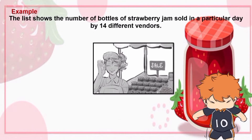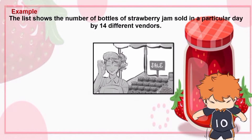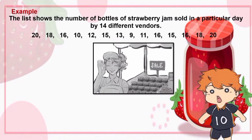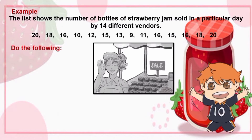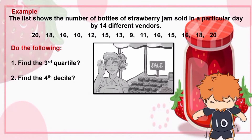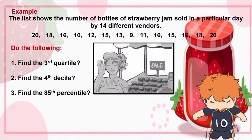The list shows the number of bottles of strawberry jam sold in a particular day by 14 different vendors. Here is the list of bottles. Do the following: first, find the third quartile; then, find the fourth decile; and lastly, find the 85th percentile.